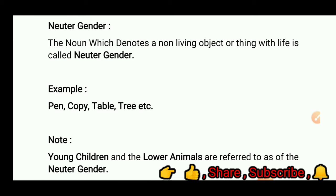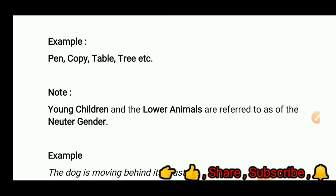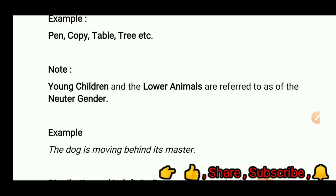Neuter gender: the noun which denotes a non-living object or a thing with life is called neuter gender. For example, pen, copy, table, tree, etc. Note: young children and the lower animals are referred to as neuter gender. Example — 'The dog is moving behind its master.' Here, the dog is considered neuter gender and 'its' is used.